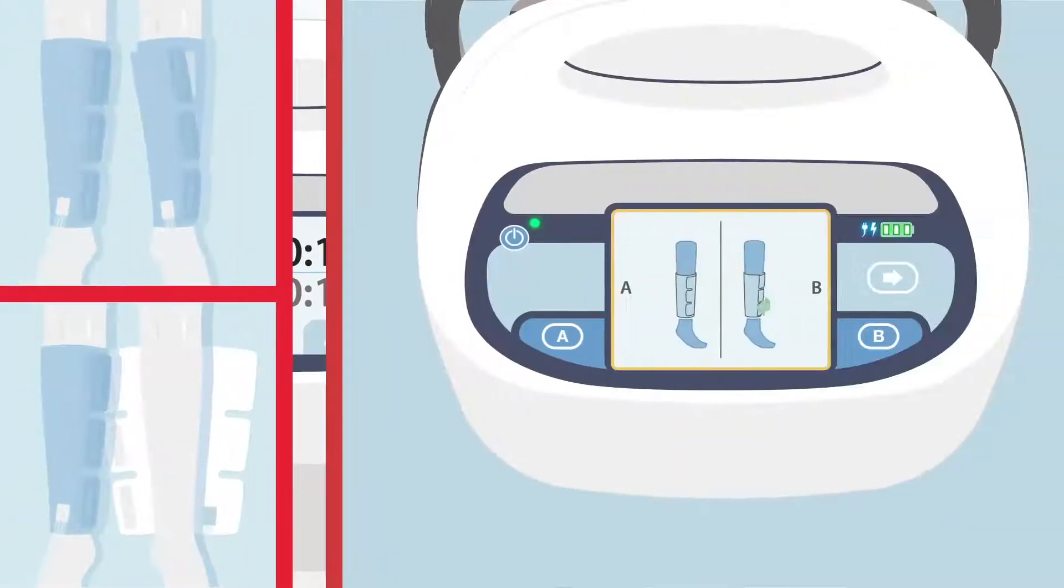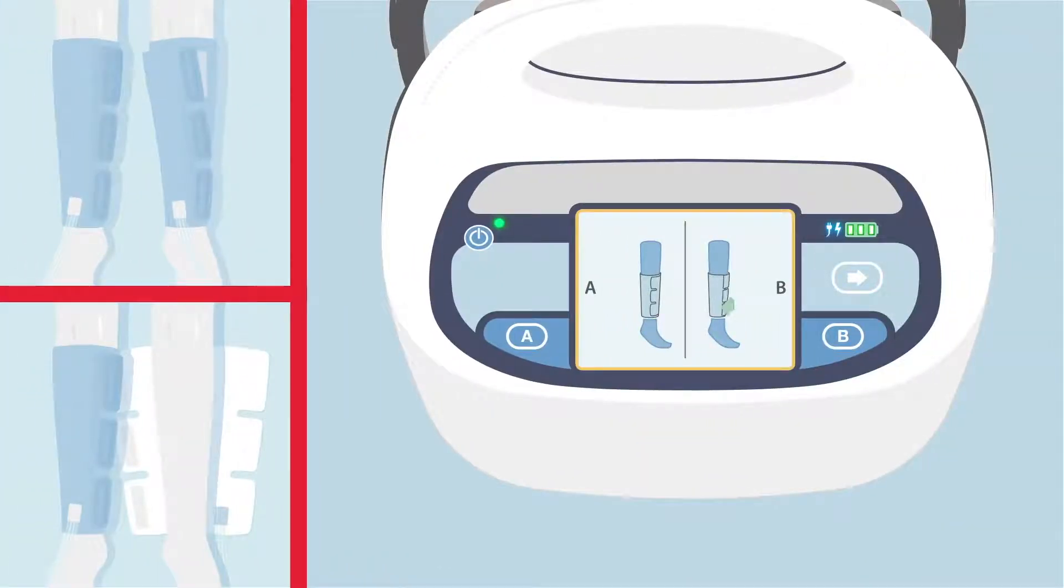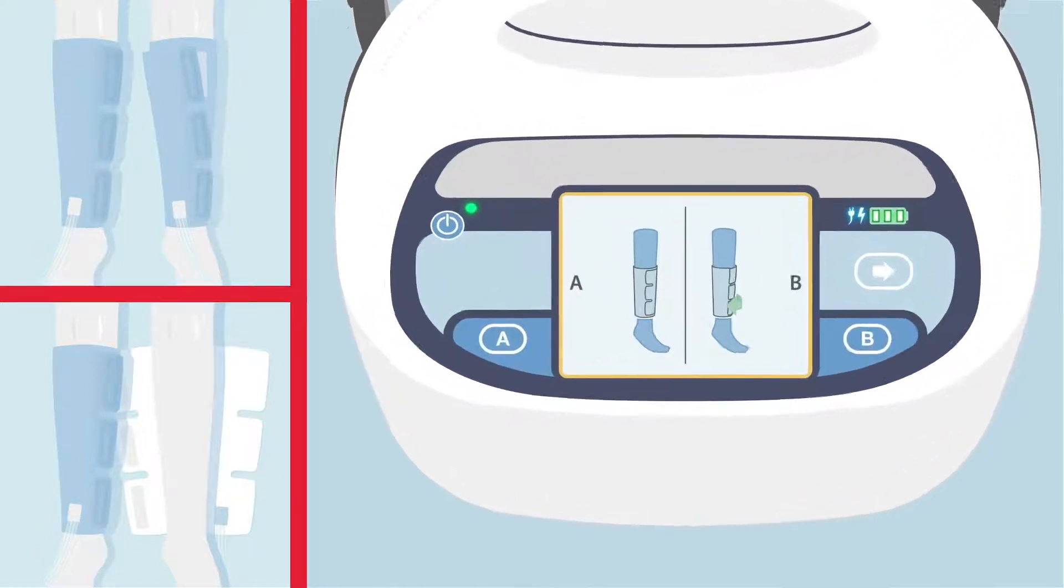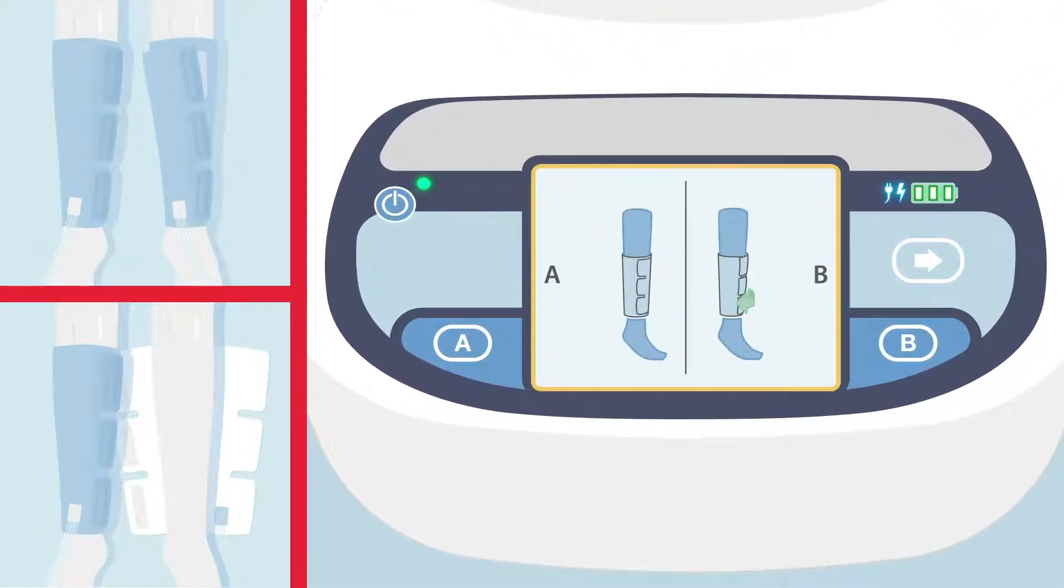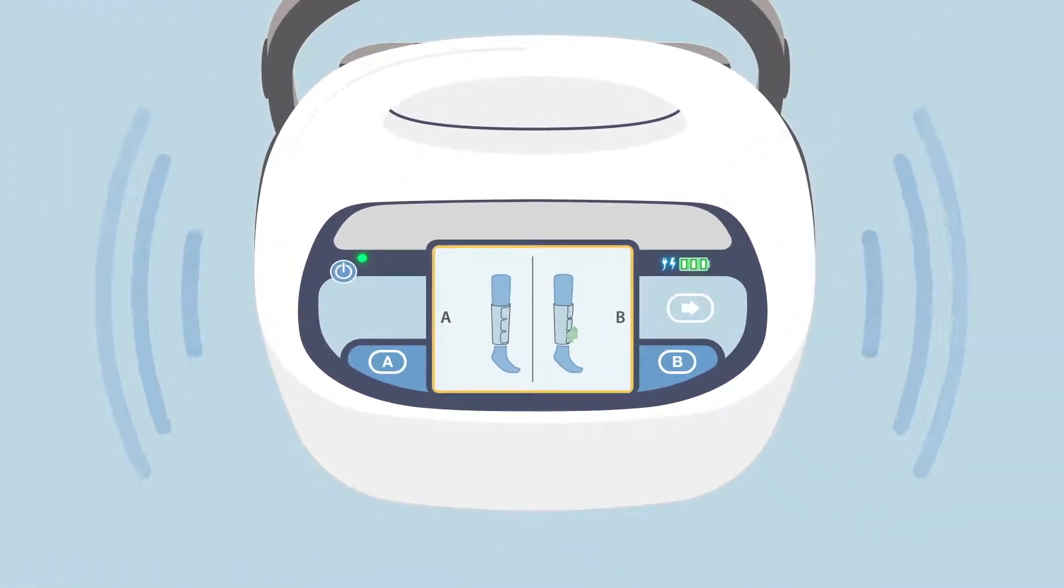If the patient takes off the sleeves or the sleeves are not wrapped properly, on the next 30-minute cycle, the pump will display that the patient is not detected and it will make an intermittent beep to notify the provider.